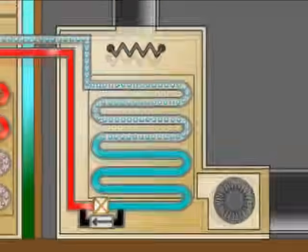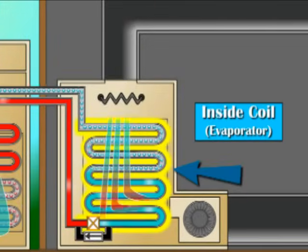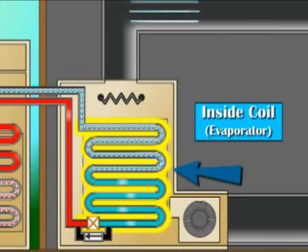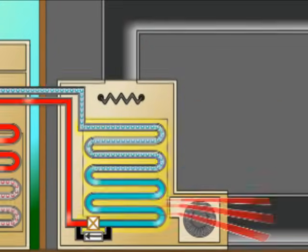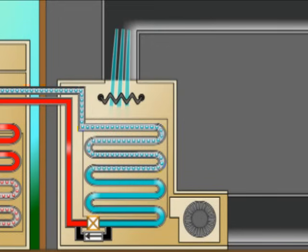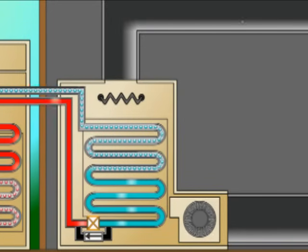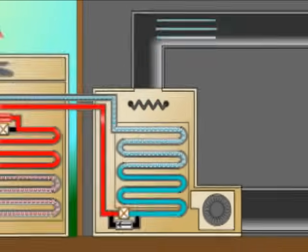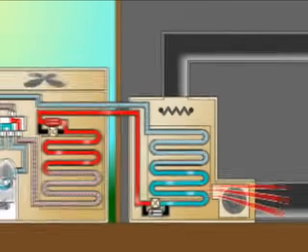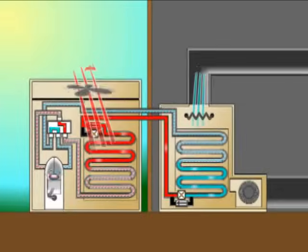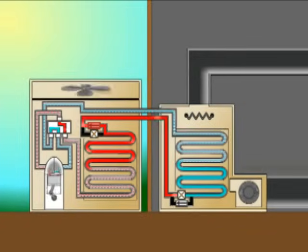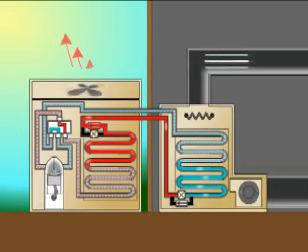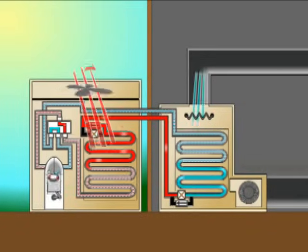As the refrigerant evaporates, it absorbs heat from the passing air. In addition, the cold evaporator collects moisture, which provides dehumidification for the home. The refrigerant then travels back to the compressor, where the process is repeated over and over again.